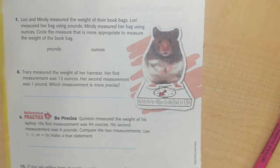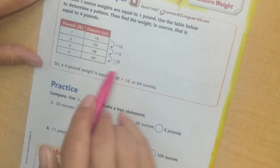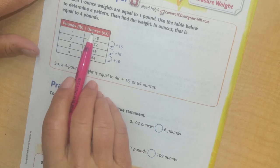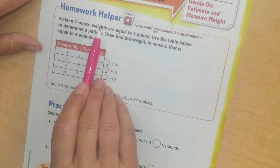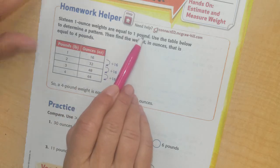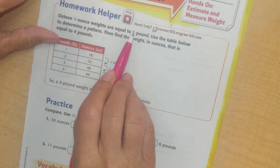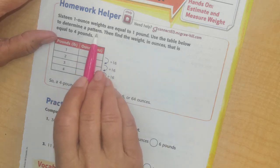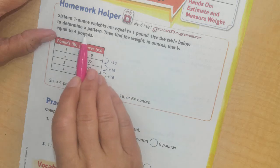We're seeing how much things weigh. We don't have a scale though in our classroom, so we're just kind of using the numbers they give us or kind of guessing how much it would weigh. So 16 one-ounce weights are equal to one pound. Use the table below to determine the pattern, then find the weight in ounces that is equal to four pounds.